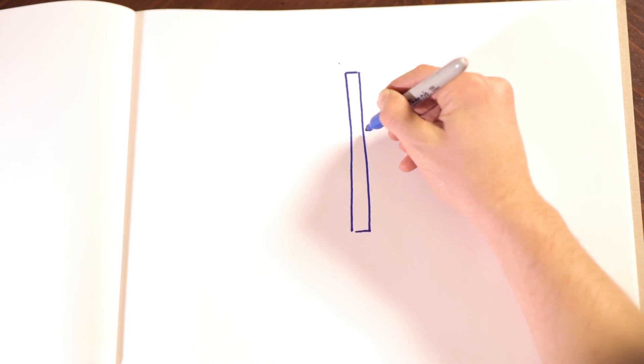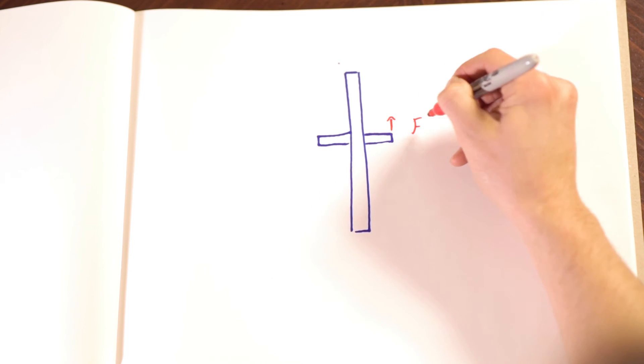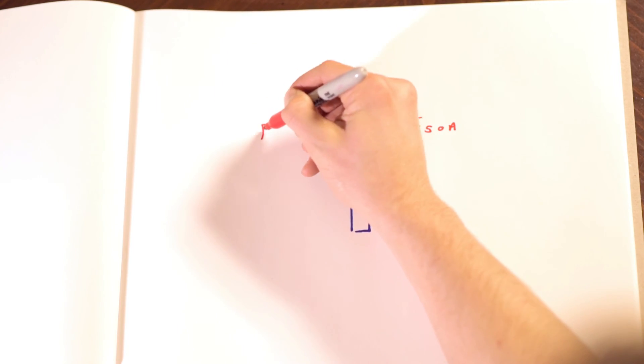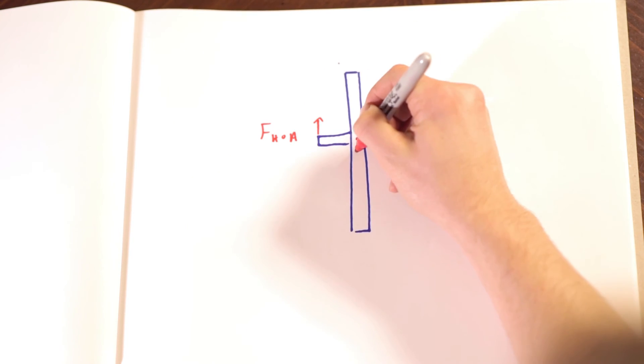To begin with, let's only consider the wheel suspended by the string and supported by your hand. Between the force of the string on the axle and the force of your hand on the axle, you need to be able to overcome the force of gravity in order to keep the wheel elevated.